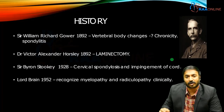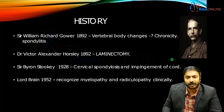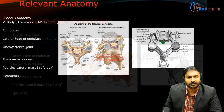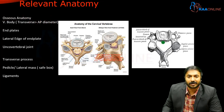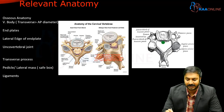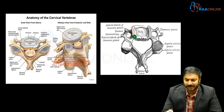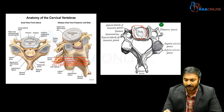Spondylosis refers to compression and impingement of the cord causing myelopathy symptoms. In 1952, myelopathy, radiculopathy, and axial neck pain were all recognized as symptoms of degenerative cervical pathology. Before jumping into cervical myelopathy, you should understand the relevant anatomy. This is a typical cervical vertebral body, representing C3 to C6.